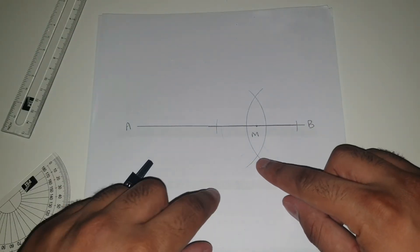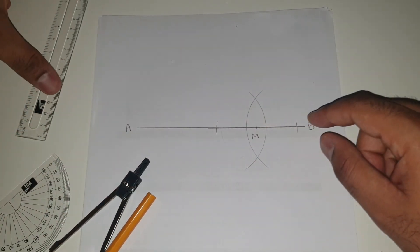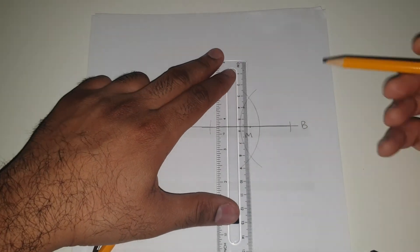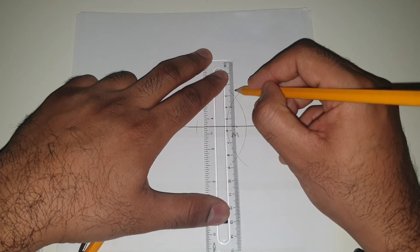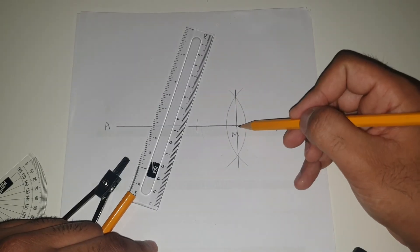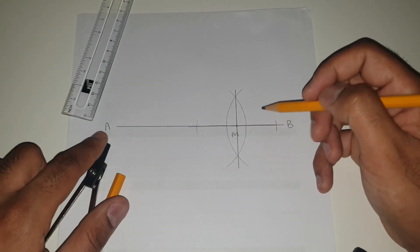And then as you can see you have got two points where the two circles or parts of a circle intersect. And if you join those two up, when you join those two up you'll realize that the line passes through the point M which is on the line AB.